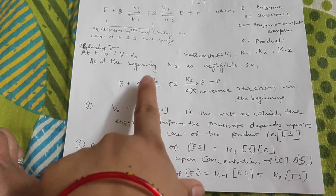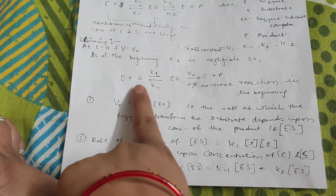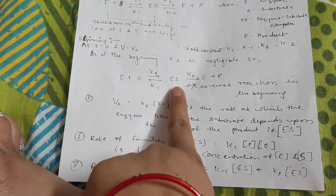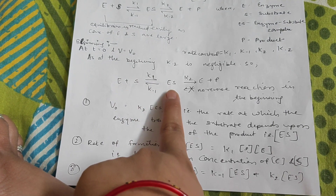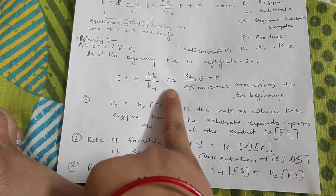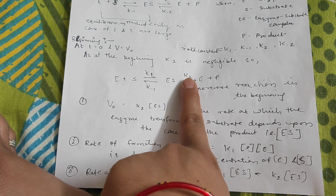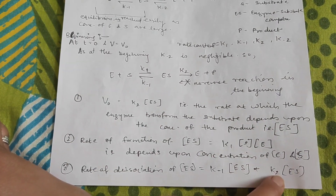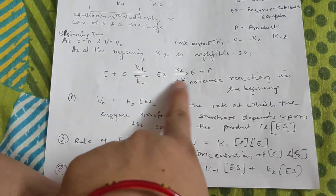The rate of formation of ES depends on K1 and the concentrations of free enzyme [E] and substrate [S] — how much they collide with each other determines how much ES is formed. In the backward step, ES dissociates back with rate K-1·[ES]. ES also dissociates in the forward direction to give enzyme and product with rate K2·[ES]. Therefore, the rate of dissociation of ES = K-1·[ES] + K2·[ES], covering both directions.